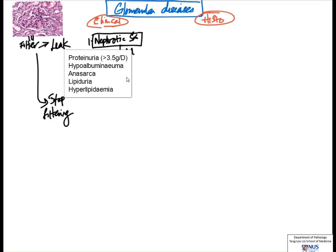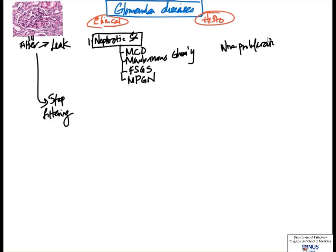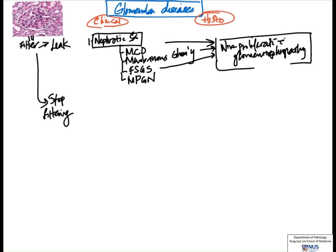In nephrotic syndrome, the commonest cause is minimal change disease, often seen in children. Another cause is membranous glomerulonephropathy. Another cause is focal segmental glomerulosclerosis, and yet another is membranoproliferative glomerulonephritis. Interestingly, most causes of nephrotic syndrome are non-proliferative glomerulopathies — three of these conditions are non-proliferative, whereas membranoproliferative glomerulonephritis, as the name suggests, is proliferative, showing increased cellularity in the glomeruli.